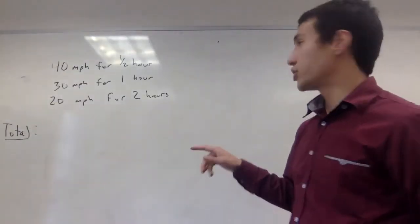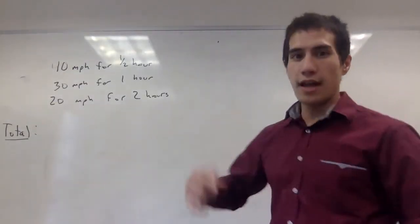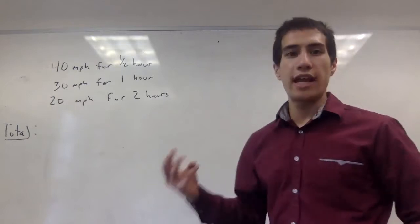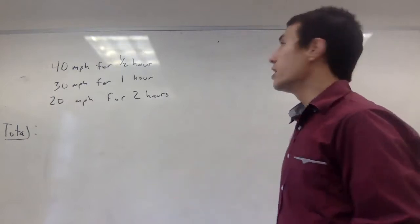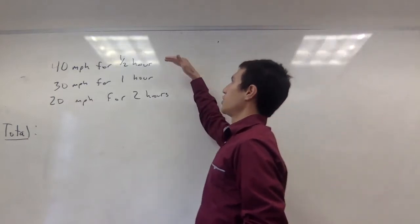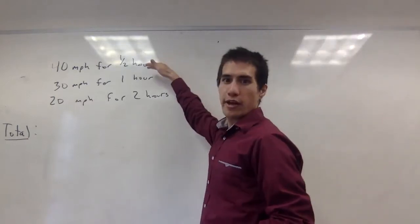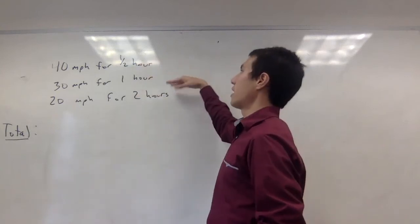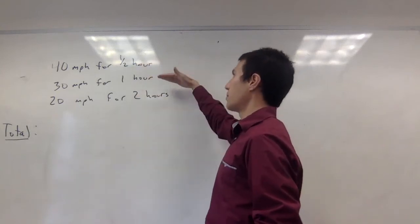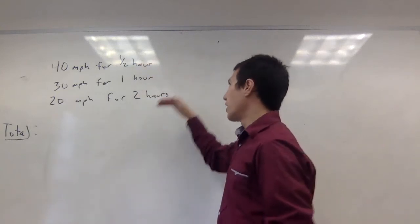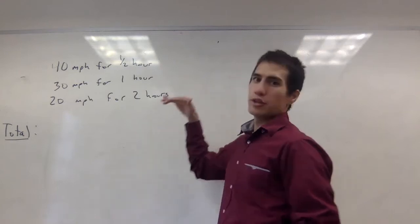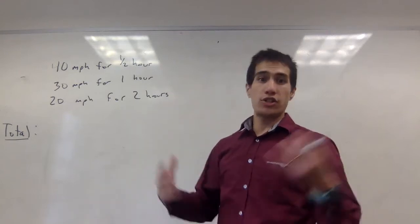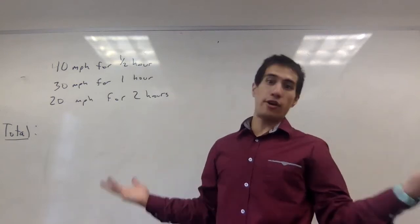In this video I want to talk about the relationship between velocity and distance traveled and area. So let's say we're in a car and we drive 40 miles per hour for one half hour, and then we drive 30 miles per hour for one hour, and then we drive 20 miles per hour for two hours. The question is how far did we drive?